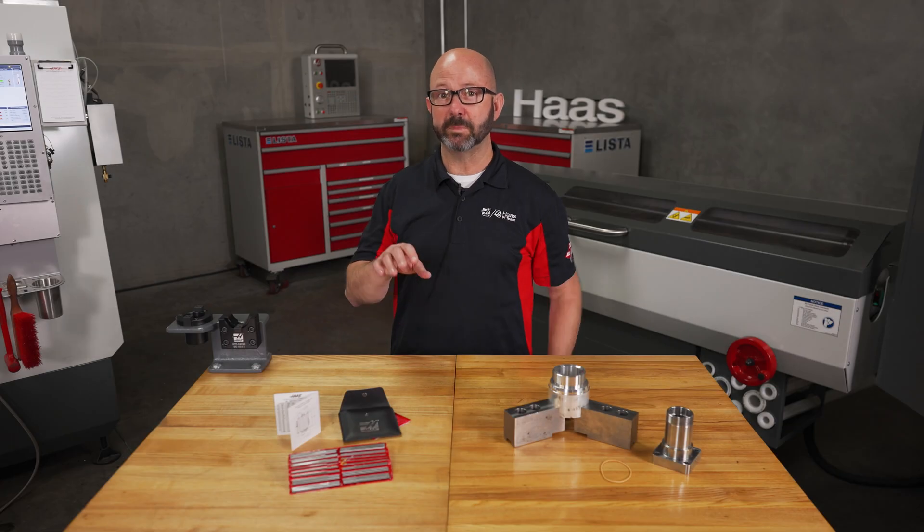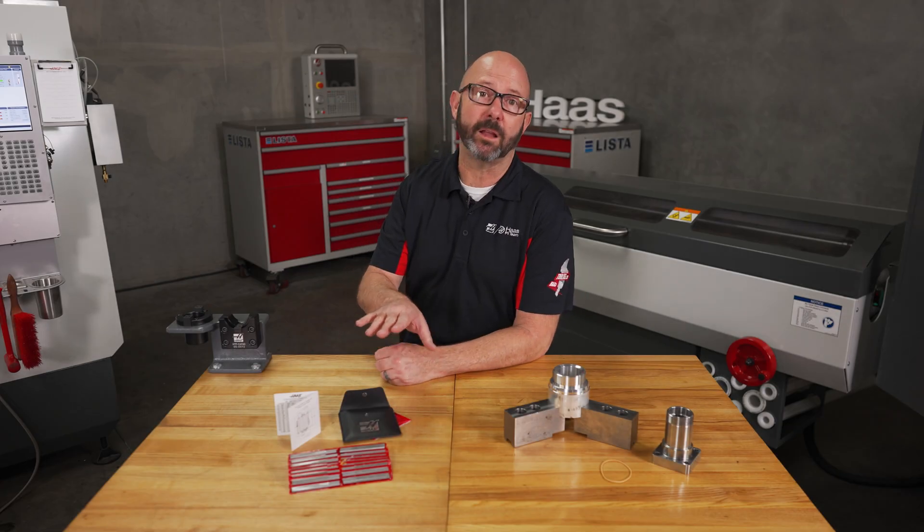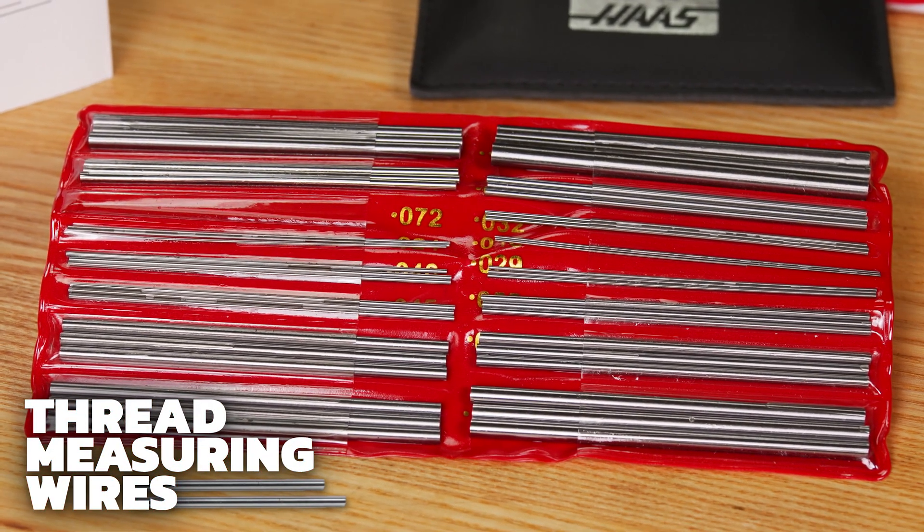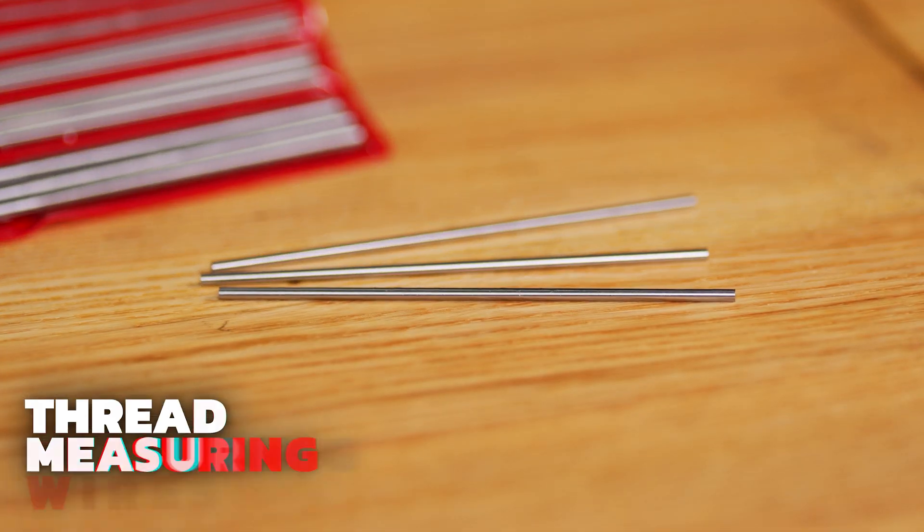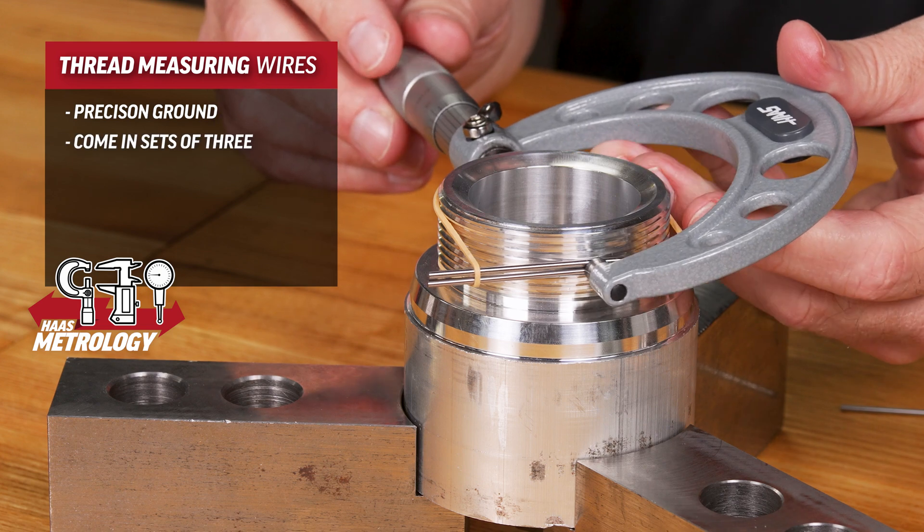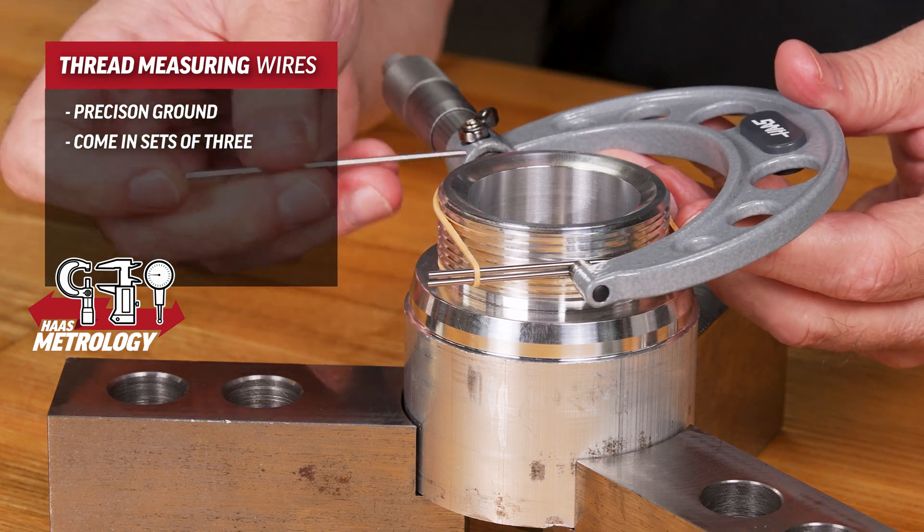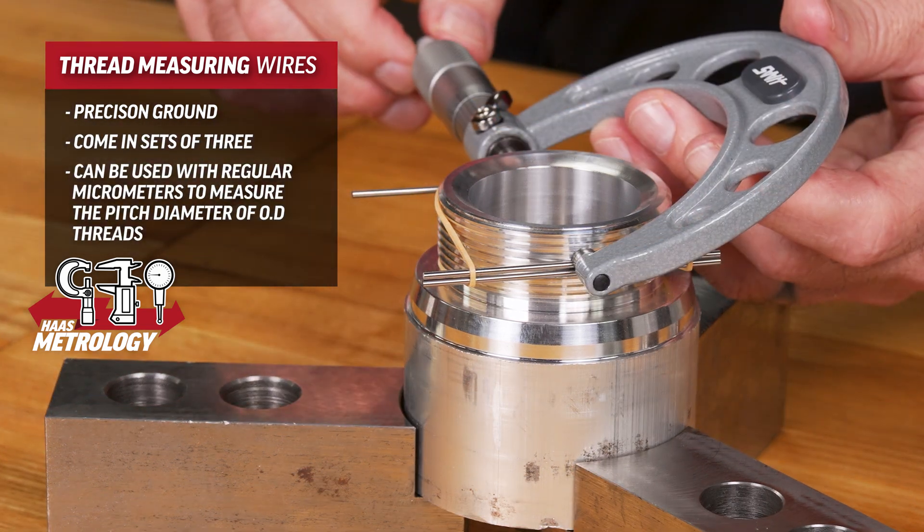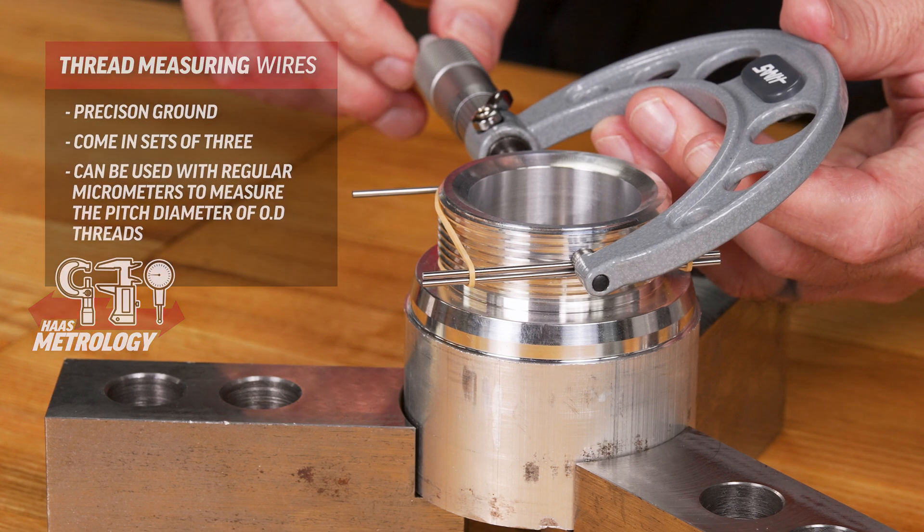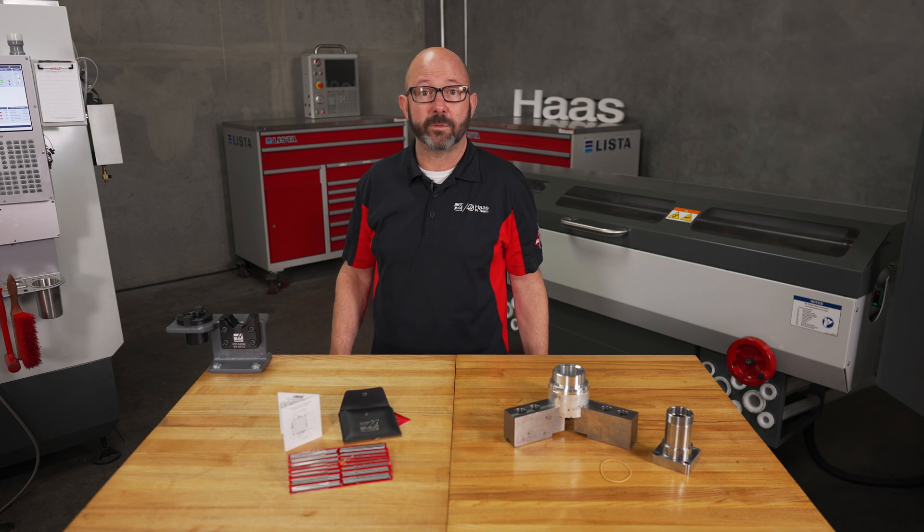This essential machinist tool looks an awful lot like gauge pins and they're very similar, but they serve a very different purpose. These are thread measuring wires. These pins or wires are precision ground and come in sets of three. We use them along with a regular set of micrometers to measure the pitch diameters of outside threads.